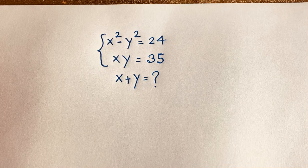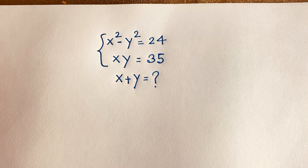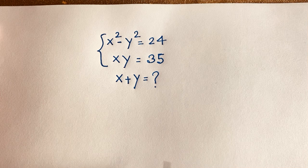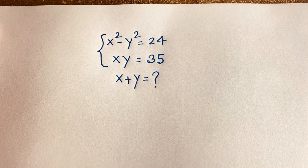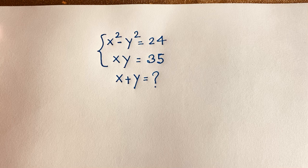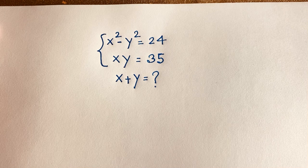Hello everyone, welcome to Rasha's classroom. Today we have solved this algebraic Math Olympiad question. The question is: x squared minus y squared is equal to 24, xy is equal to 35. Find x plus y.